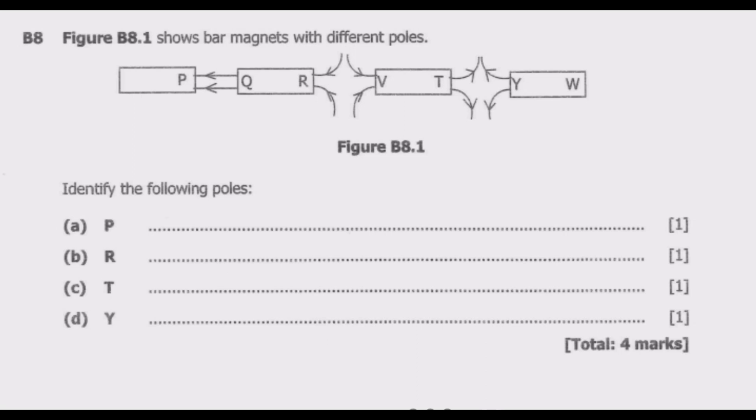The principle that we need to use is the fact that magnetic field lines move from north pole to a south pole. So you need to know this. Once you know this we can easily identify the poles.